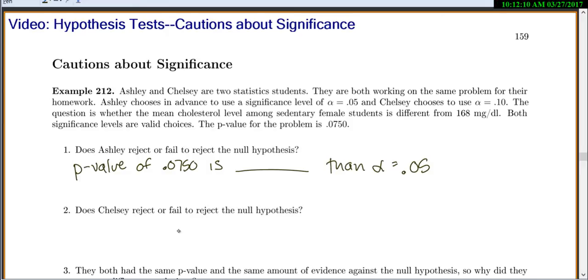So her p-value, 0.075, is bigger than alpha equals 0.05. So this one is bigger. Anytime you get a big p-value, you will fail to reject the null hypothesis.